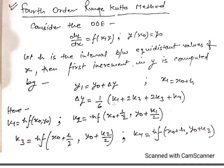The formulas for fourth order are: K1 = H·f(x₀, y₀); K2 = H·f(x₀ + H/2, y₀ + K1/2); K3 = H·f(x₀ + H/2, y₀ + K2/2); K4 = H·f(x₀ + H, y₀ + K3). First calculate K1, K2, K3, K4, then compute Δy = (1/6)(K1 + 2K2 + 2K3 + K4), and finally y₁ = y₀ + Δy.